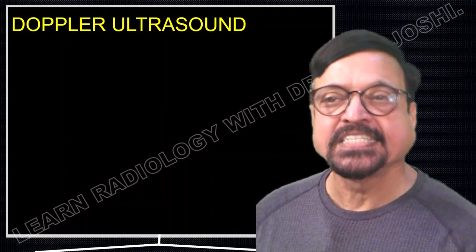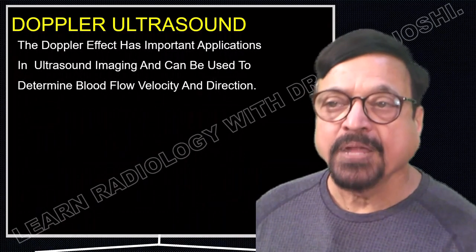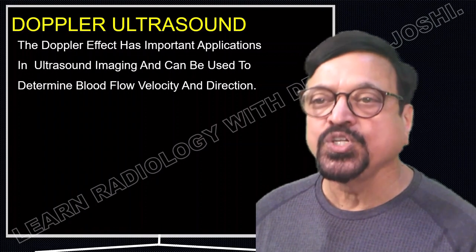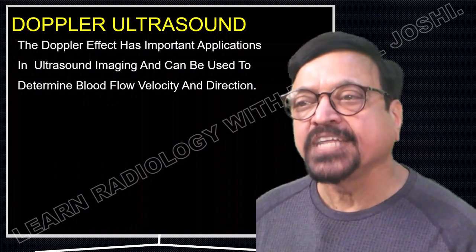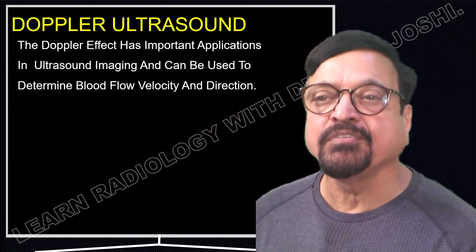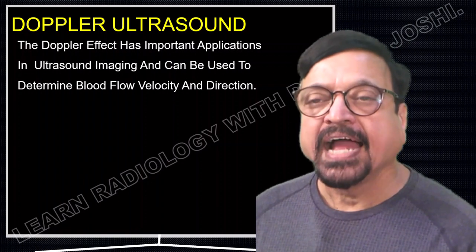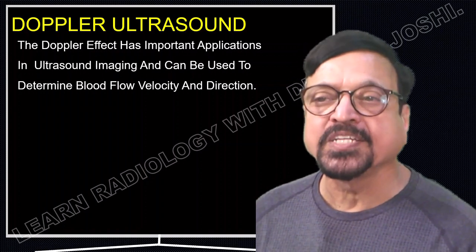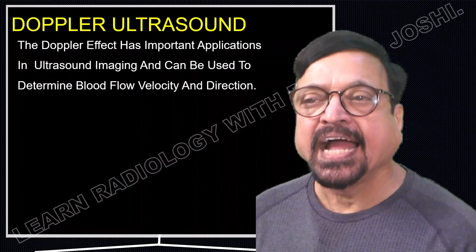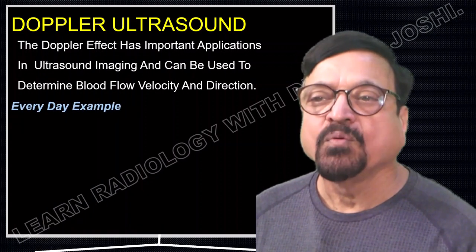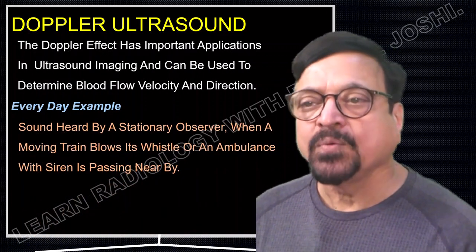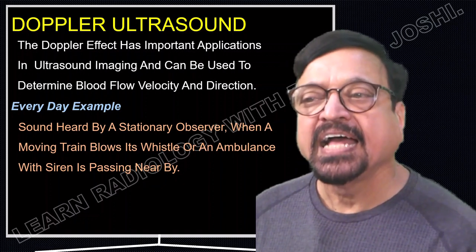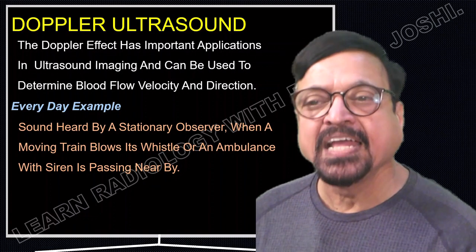We are continuing with the Resistive Index. The Doppler effect has important applications in ultrasound imaging and can be used to determine flow velocity and direction — meaning you know at what velocity RBCs are moving below the probe and also the direction from colour and from the graph. An everyday example of the Doppler effect is the sound heard by a stationary observer when a moving train blows its whistle or an ambulance passes with its siren.